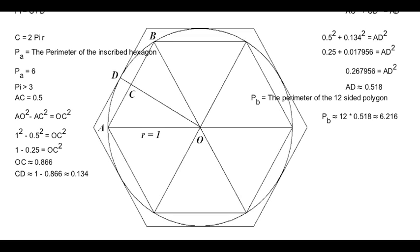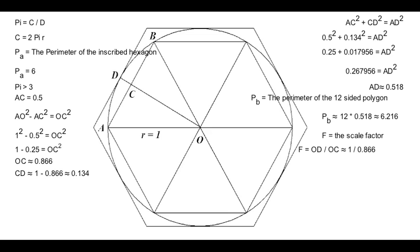Now we're going to add a polygon around the circle, which is called circumscribing. You'll notice that the circumscribed polygon is just a scaled-up copy of the inscribed polygon. This means that if we can find a scale factor, we can multiply the perimeter of the inscribed polygon by the scale factor and get the perimeter of the circumscribed polygon. A scale factor is equal to a dimension of the image divided by the corresponding dimension of the object. In this case, we will use the distance from the center of the polygon to the midpoint of one of its sides as our dimension. For the inscribed polygon, this distance is OC, and for the circumscribed polygon, it's OD, which happens to be equal to the radius of the circle. This means that the scale factor is OD over OC, which is approximately equal to 1 over 0.866.